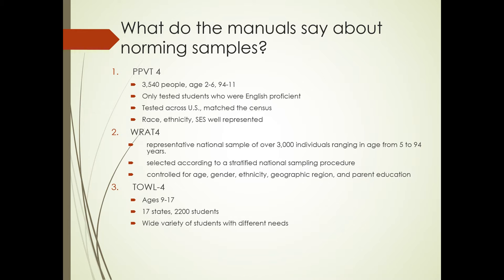The TOWL-4 is for ages 9 to 17. They tested it in 17 states, over 2,000 students. And the only real description of the student characteristics was that it included a wide variety of students with different needs. The AATR was tested with beginning kindergarten through eighth grade. It was tested only on a Midwestern sample with 30 to 40 per grade. So you'd have to be cautious if you're using this in any area other than the Midwest.